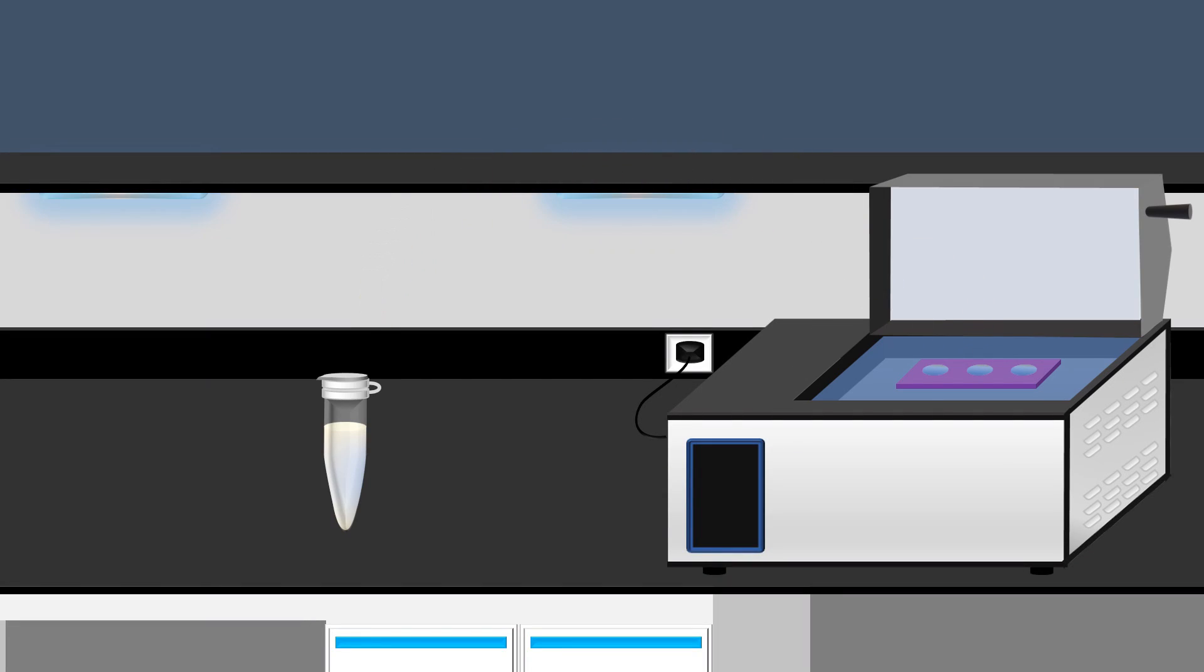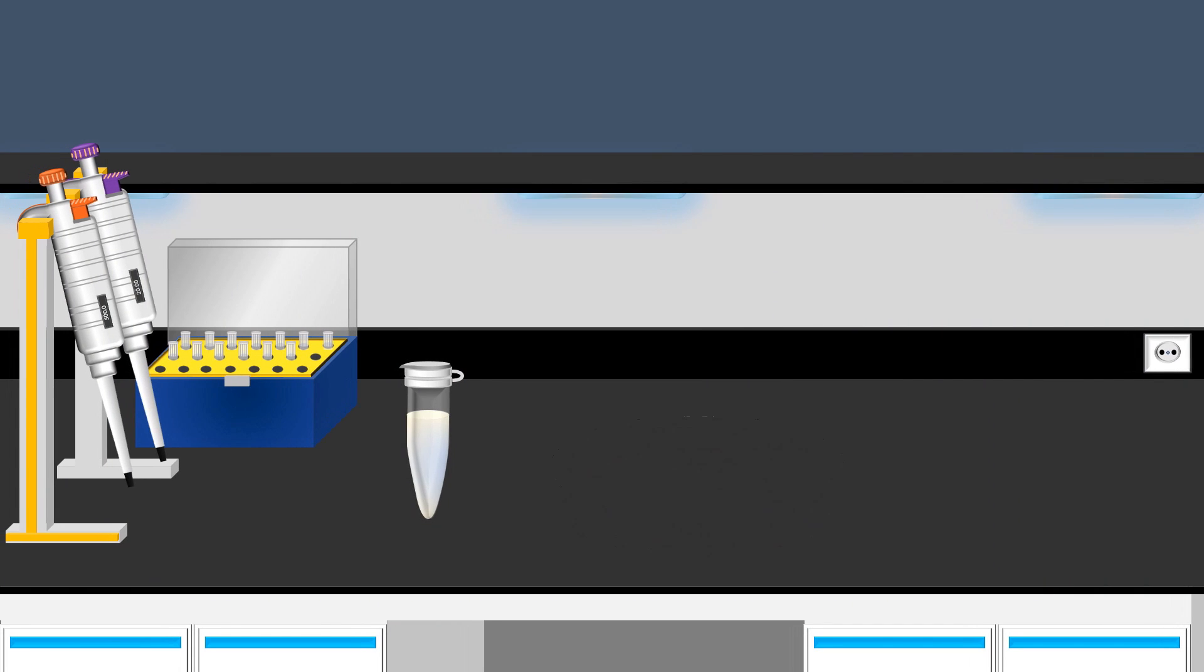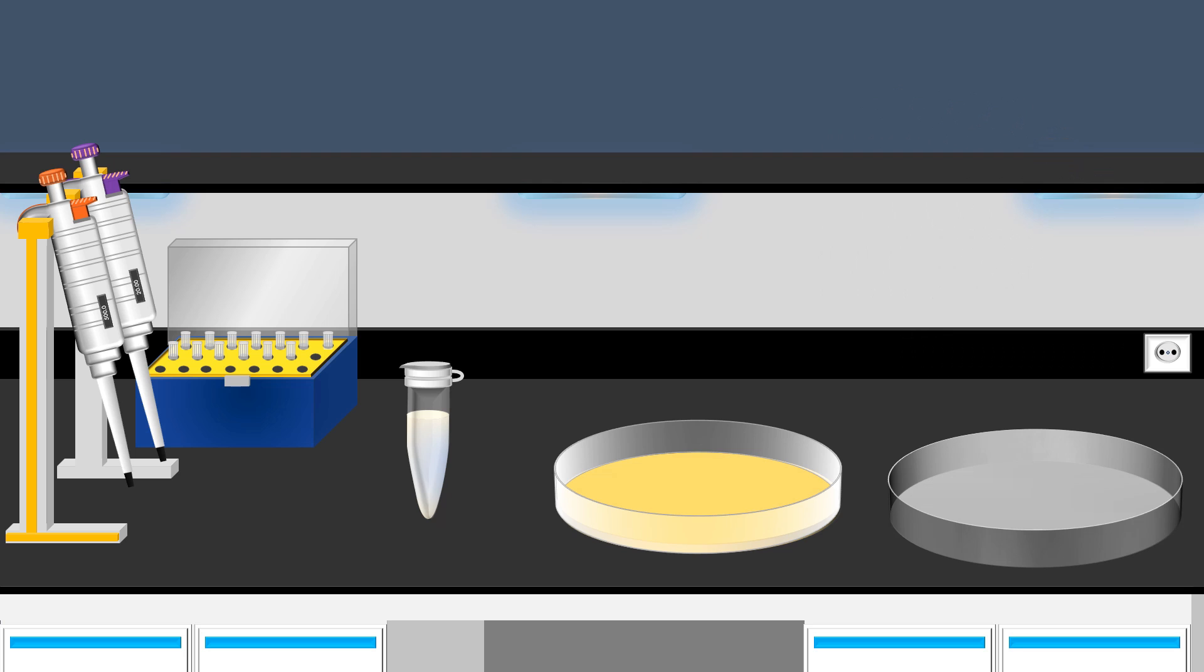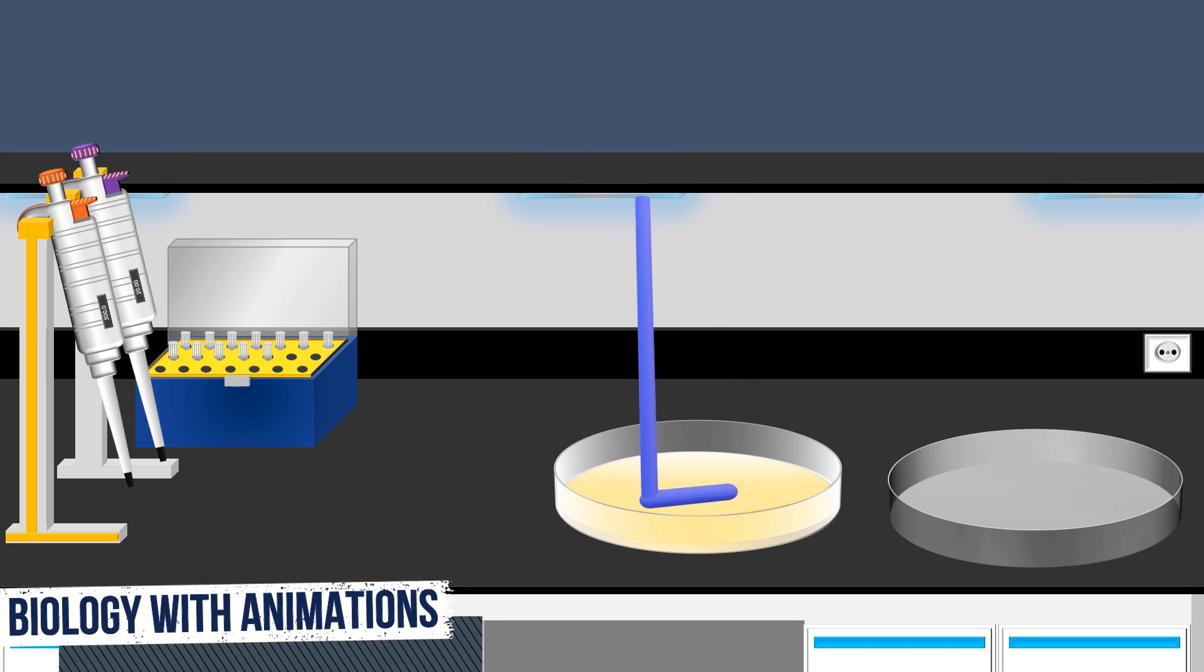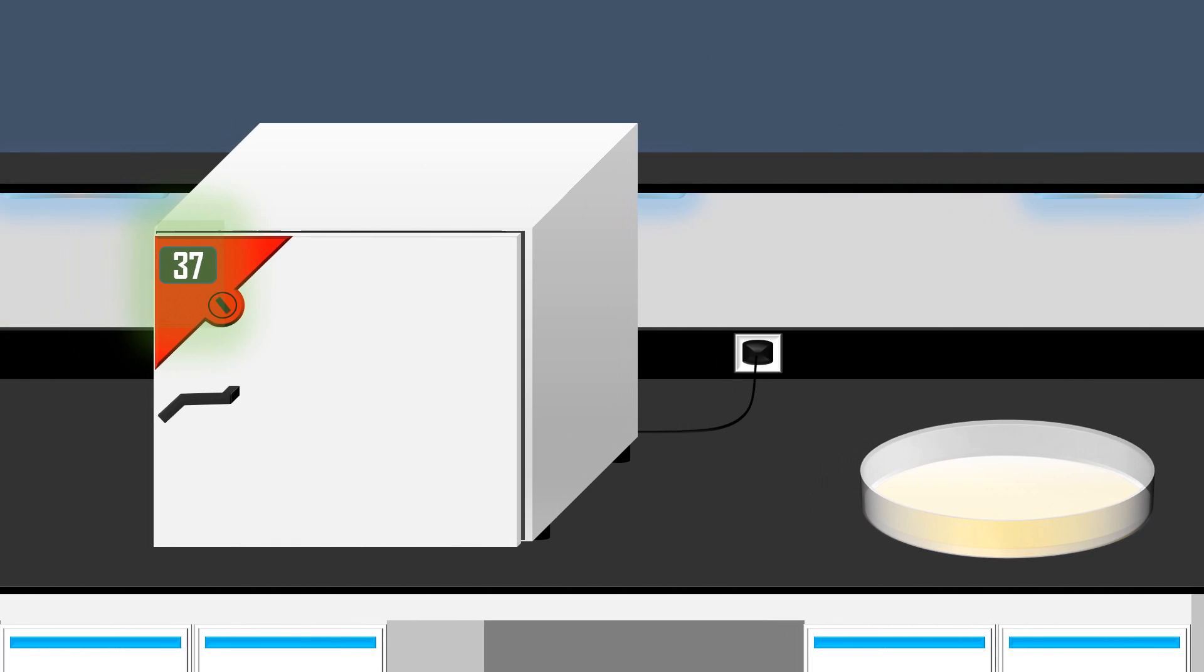After bacterial transformation, the next step in the cloning process is to cultivate the bacterial cells. For bacterial cultivation, an appropriate volume is transferred into a culture medium containing all the essential elements for optimal bacterial growth. Then, the liquid is evenly spread on the culture medium using a cell spreader. Following that, the culture medium is incubated at 37 degrees Celsius overnight.